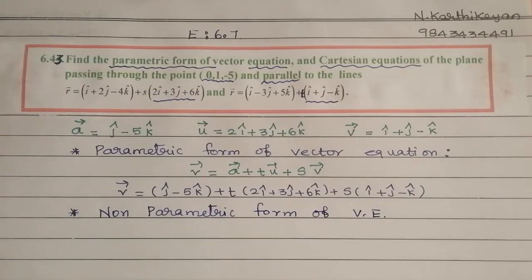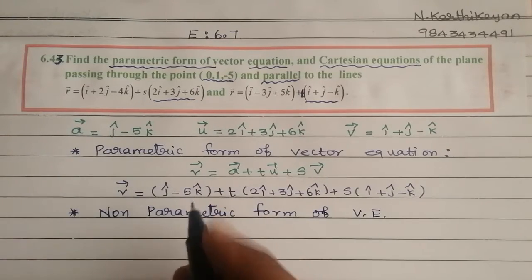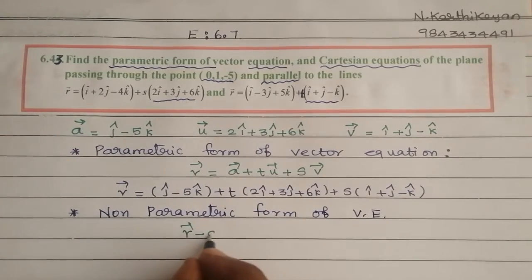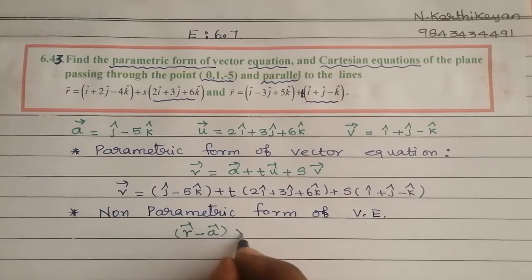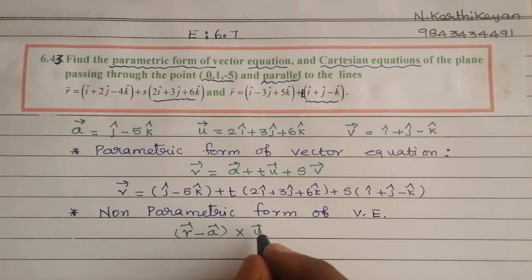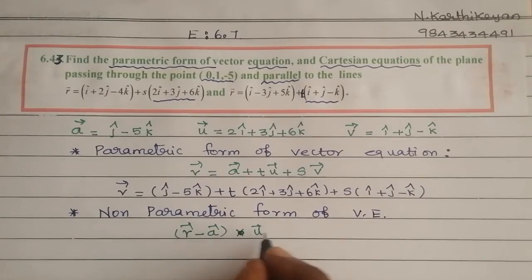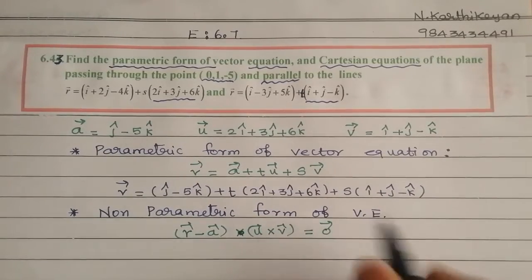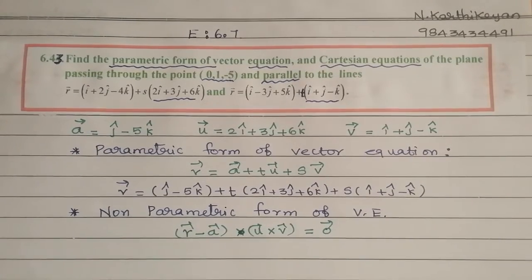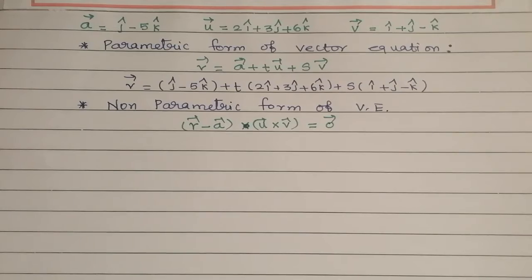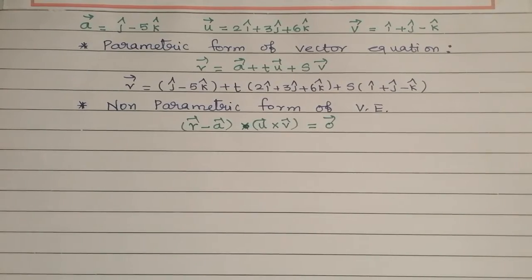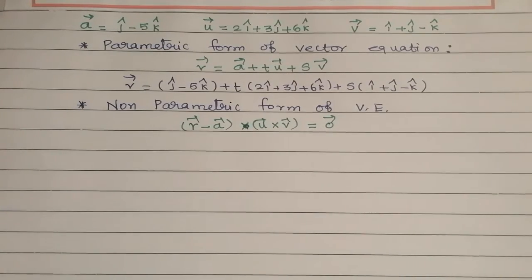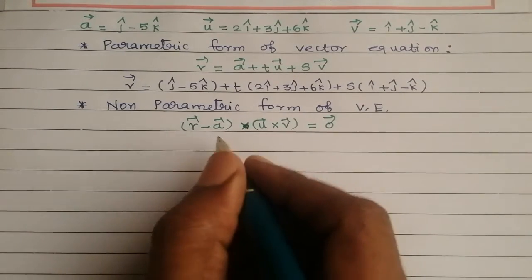Now for the non-parametric form of vector equation. The formula is: (r vector minus a vector) dot (u vector cross v vector) equal to 0. This is the non-parametric vector equation.